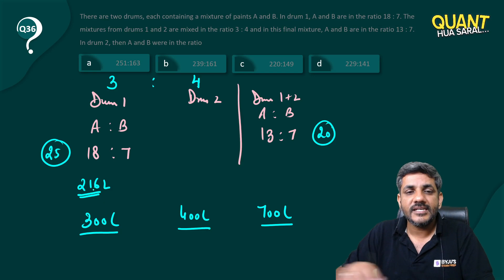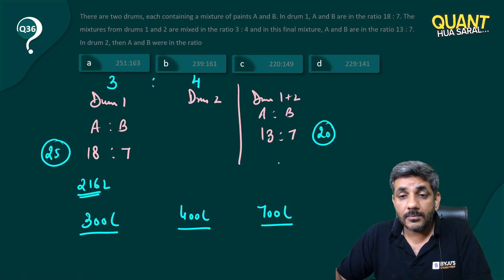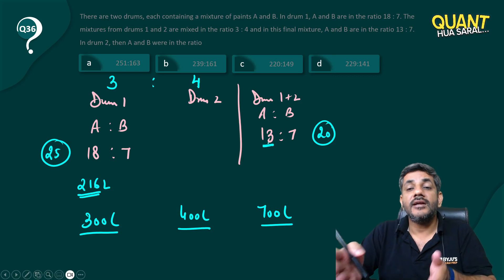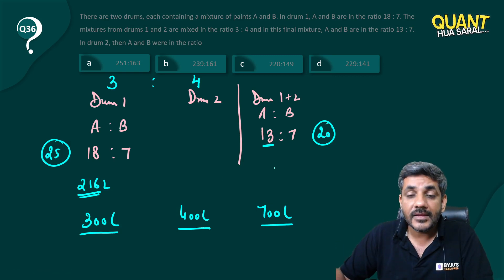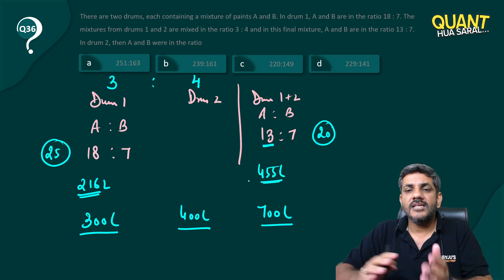So I have 216 liters of A in drum 1. What about the final drum? When 20 divides 700 it gives us 35, so 13 into 35. 13 into 35 will be the quantity of A in the final drum. 13 into 35 would be equal to 455.